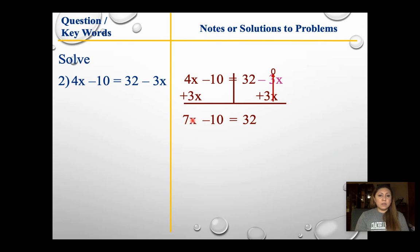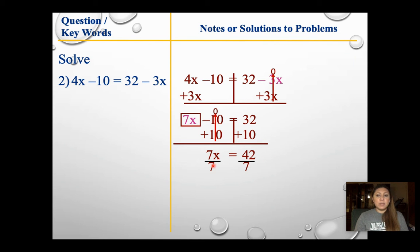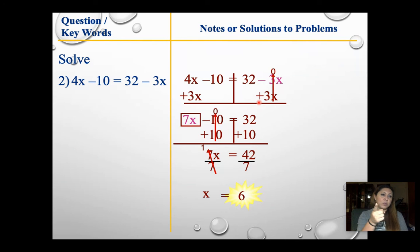From here I want to keep my 7x, so I need to move the negative 10 over. I'm going to do the upside down T. To get rid of a negative 10, I add 10 to both sides. 7x comes down, negative 10 plus 10 gives me 0, and 32 plus 10 is 42. Then I divide both sides by 7 to isolate the variable. 7 divided by 7 gives me 1, so I'm left with x. 7 goes into 42 six times — so x equals 6. You can plug it back in to double check.